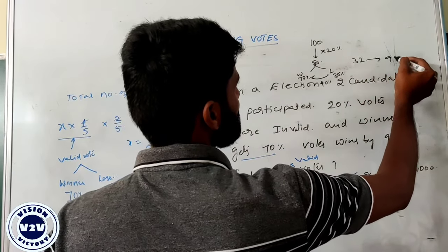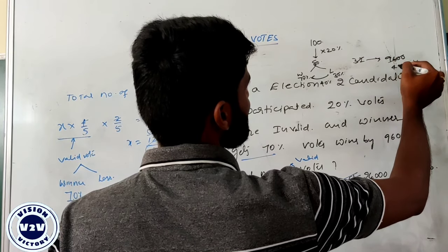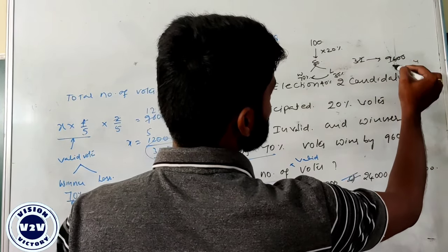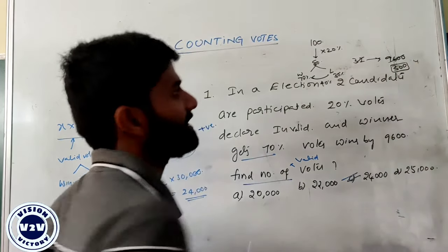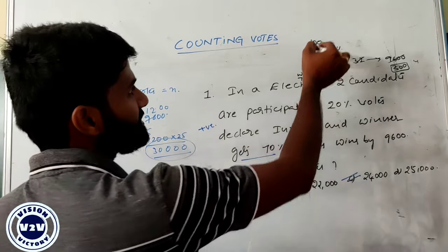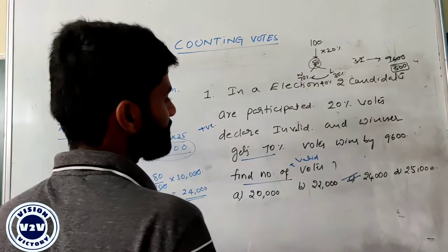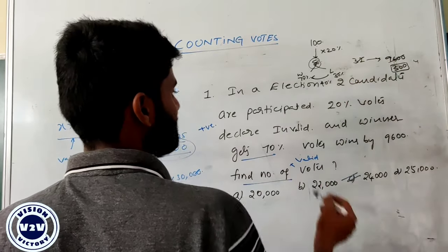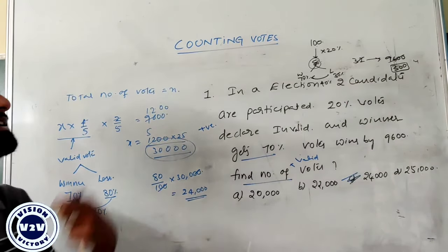If 32 units equals 9,600, each unit exactly equals 300. My question requires finding the number of valid votes. Total votes equals 100 units and valid votes equals 80 units. So 80 into 300 equals 24,000. Again the answer is 24,000. That is the other approach.